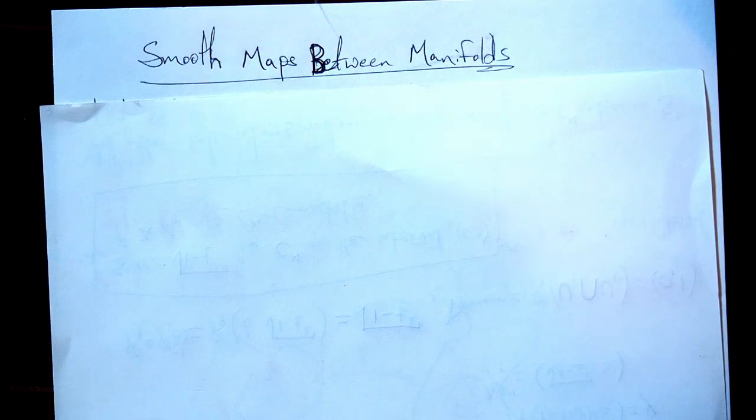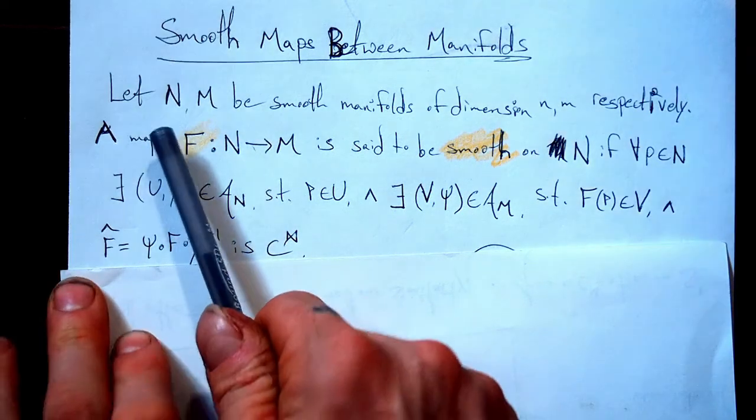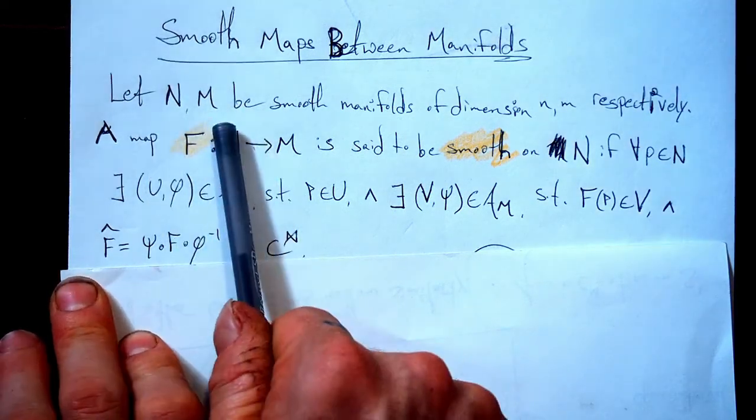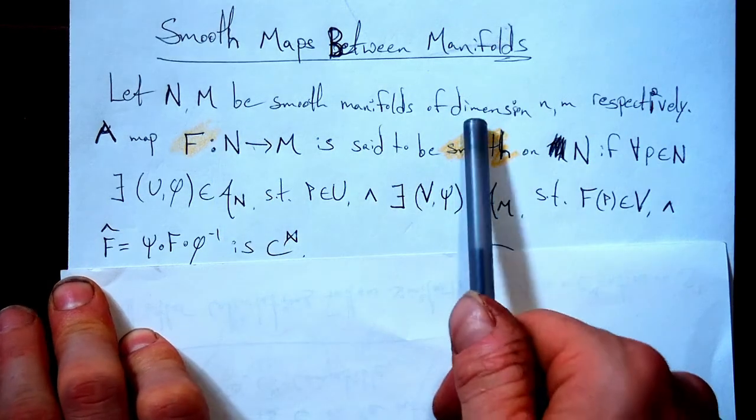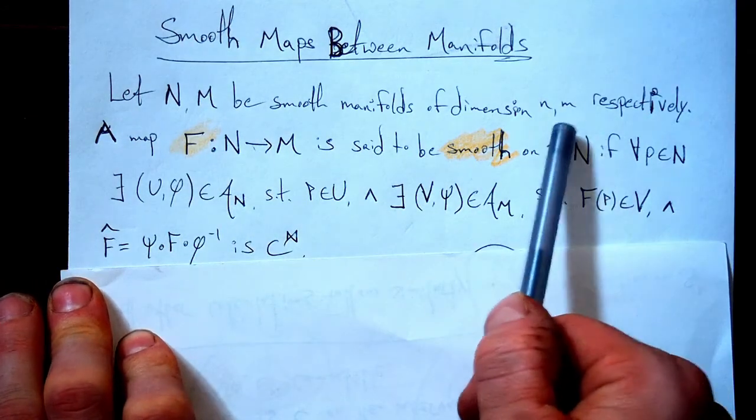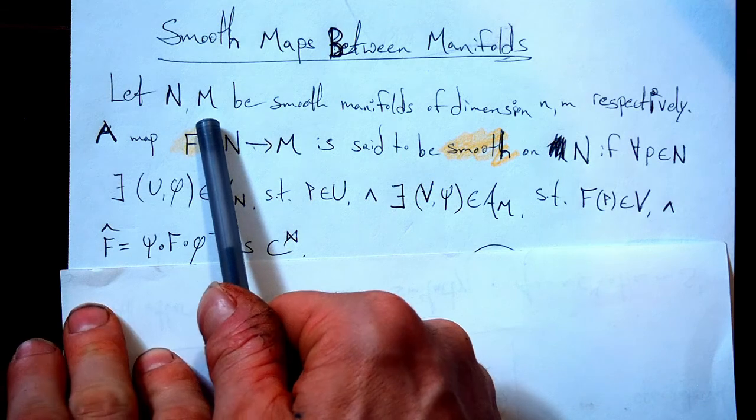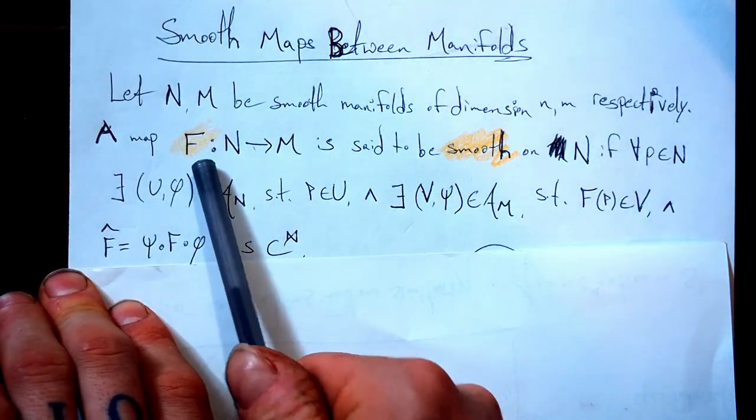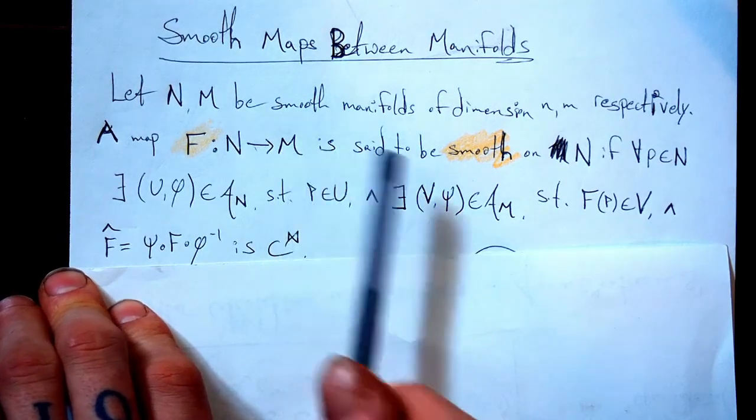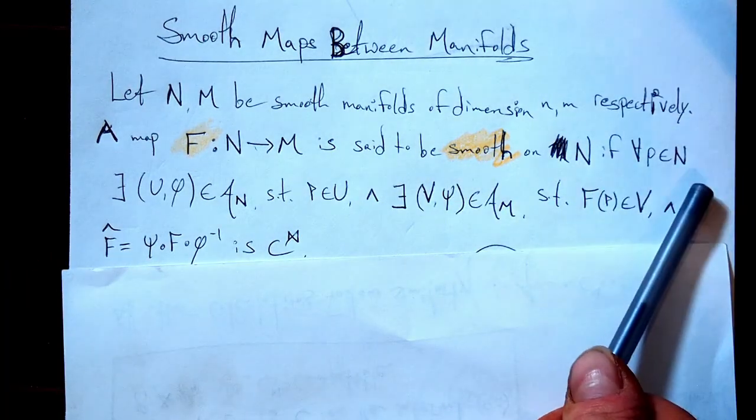Now let's look at smooth maps between manifolds. So a map that takes in points in one manifold and spits out points in another manifold. So similar to before, well, this time we've got to start off with two smooth manifolds. Let's call them N and M, capital N, capital M. And they're going to have dimension little n and little m respectively. Little n for manifold big N. Dimension little m for manifold big M. A map, we like to use capital letters for maps from one manifold to another. And we call it smooth on N if, for all points in N,